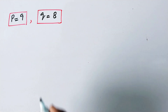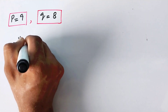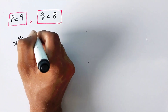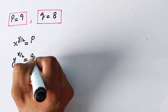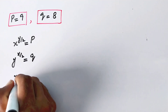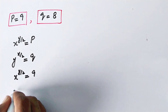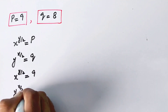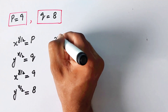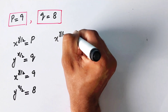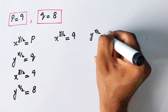Since we assumed x^(y/2) = P and y^(x/2) = Q, we can now write x^(y/2) = 9 and y^(x/2) = 8.